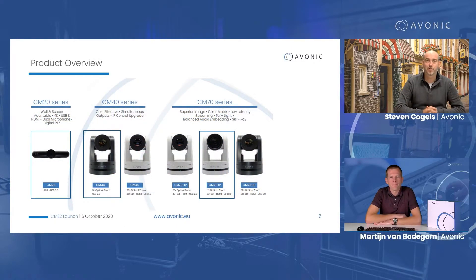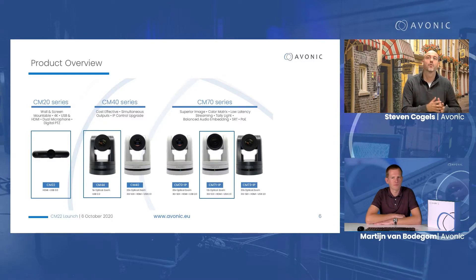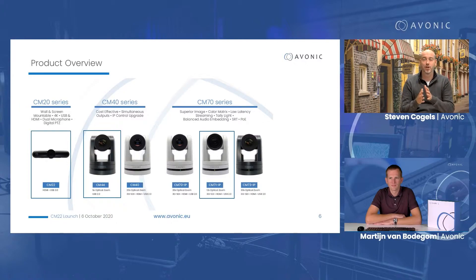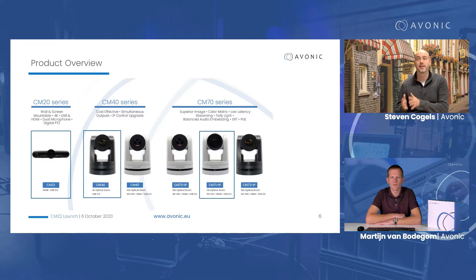As a quick refresher on our product lineup — this is not the entire lineup, I've left out accessories — our current product line is the CM20, CM40, and CM70 series. The CM20 series is the camera we're talking about today, the CM22, which is a small huddle room focused camera. Above that, we have the CM40 series, which is more for installations where you want control over RS-232, 485, or IP — available in a 5x optical zoom USB-only version and a 20x optical zoom with USB, SDI, and HDMI. That's the more budget-friendly camera line.